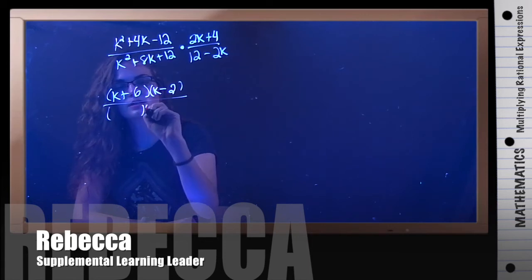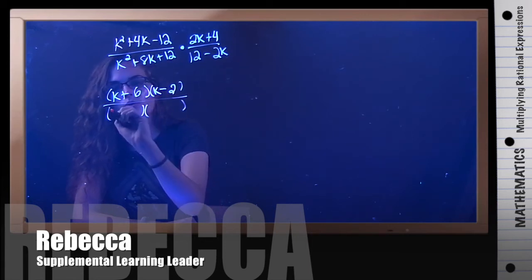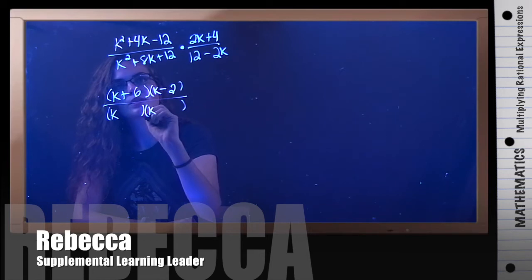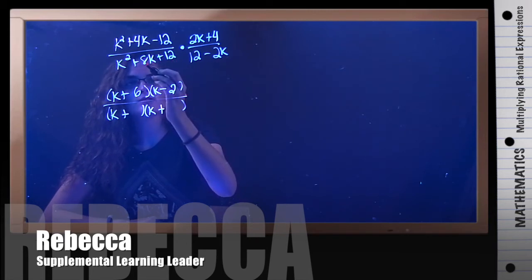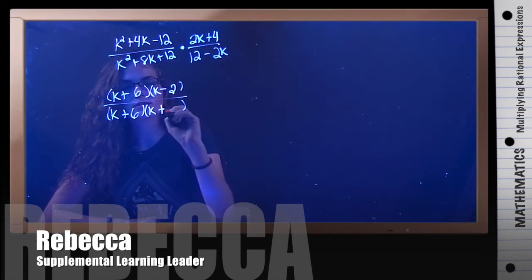Now, on the bottom, that's another standard trinomial. We would have k and k. The first sign is plus, the second sign is also positive. The multiples of 12 that give us 8 are 6 and 2.